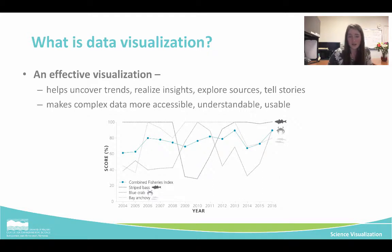This example here is from the 2016 Chesapeake Bay report card. This blue line across the center is the combined fisheries index — this is the trend of these three different indicators across the last 12 years or so.